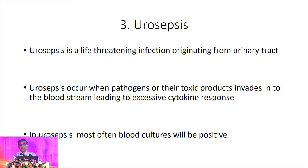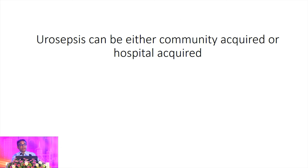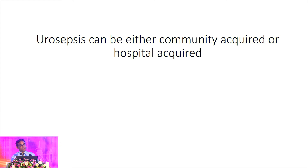For urosepsis, other than urine culture, you have to embark on blood cultures, because most of the time we may be able to isolate the causative organisms from blood. Urosepsis can be either community-acquired — where the patient comes to the hospital with urosepsis — or hospital-acquired, where following a procedure such as surgery or instrumentation, they can develop urosepsis.